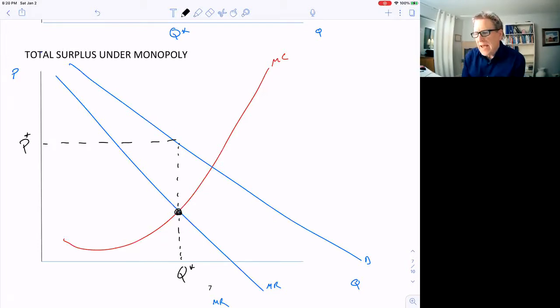And they're able to capture some of the consumer surplus because of the higher price. There's less consumer surplus in this market. So the monopolist is able to capture some of that.